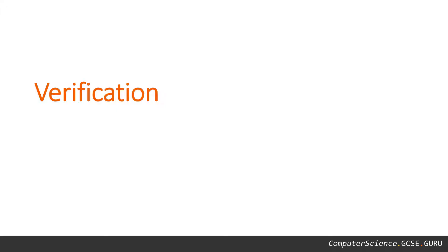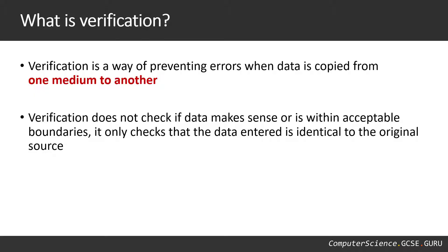Okay, let's look at verification next. Verification is completely different to validation, so let's see what that is. Verification is a way of preventing errors when data is copied from one medium to another. Verification does not check if the data makes sense or is within acceptable boundaries. Verification only checks that the data entered is identical to the original source. We're looking for the data to match one medium to another.